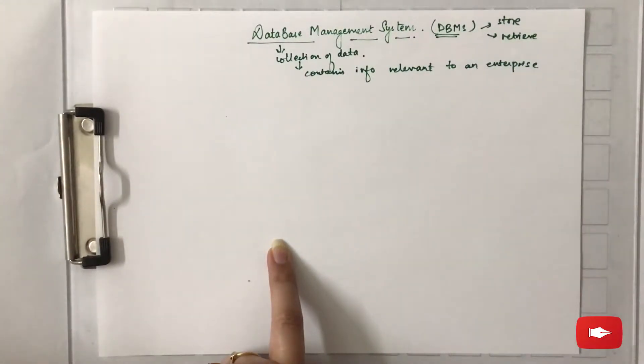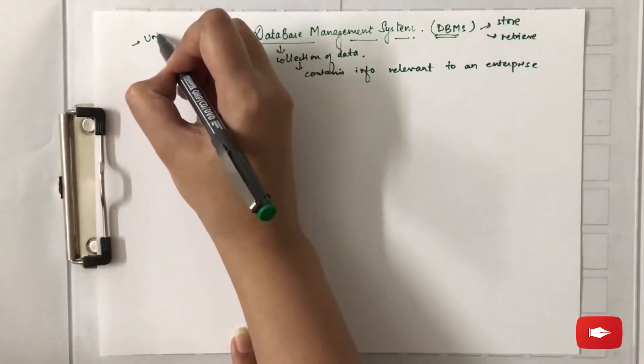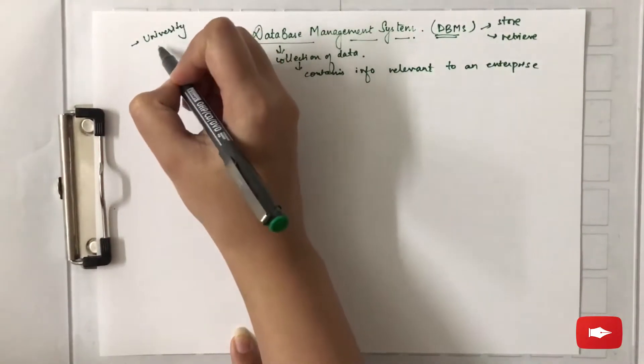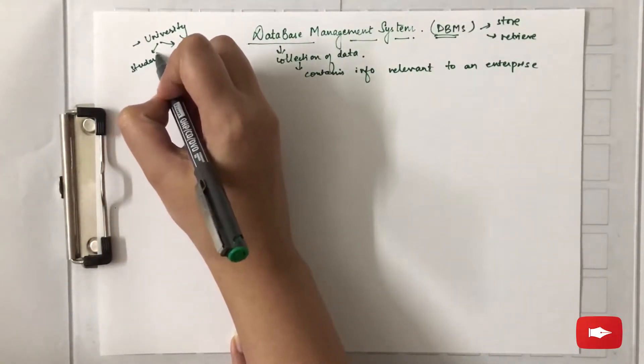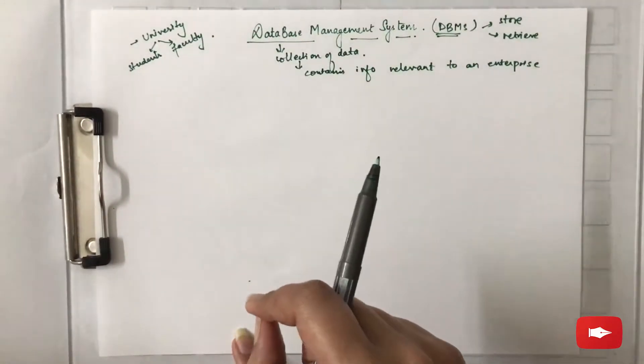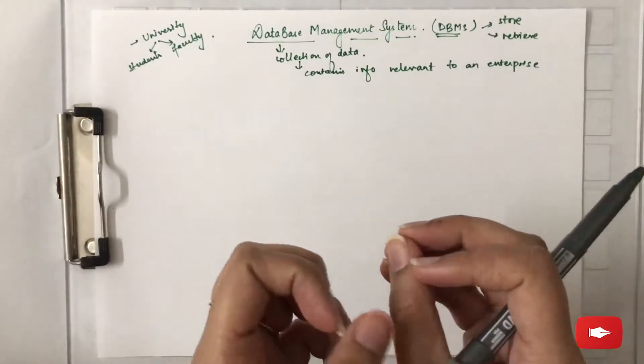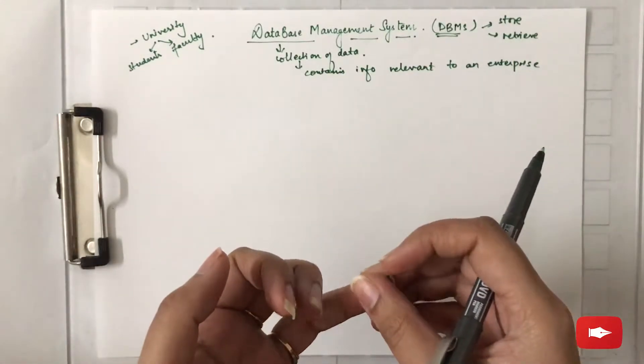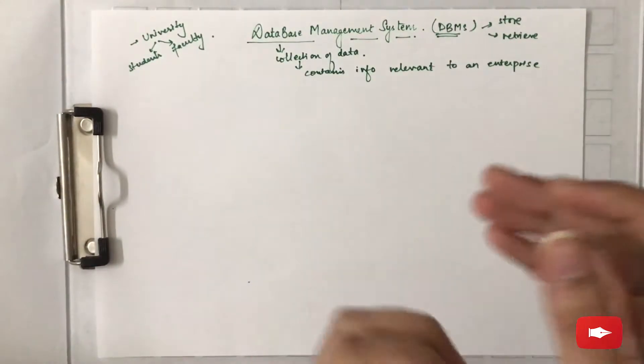For example, if you are talking about a university, it contains both students and faculty members. The information about these students and faculty members needs to be stored. The information about students' roll numbers, courses, grades, year, and such details about students, and similarly about faculty, are stored in DBMS.